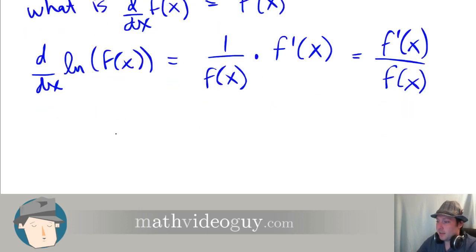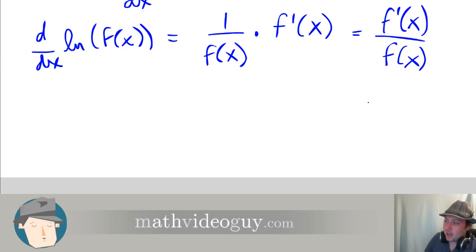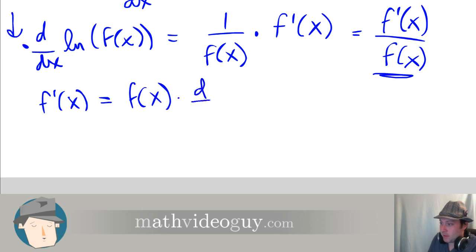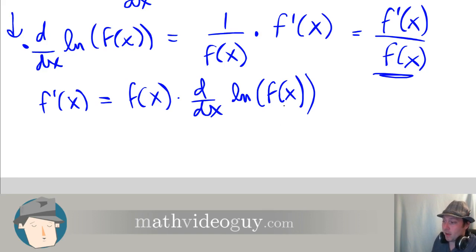This is cool because taking the derivative of ln of a function gives you the derivative of that function divided by f of x. So if you want to isolate for f prime of x, then f prime of x is equal to f of x times d by dx of ln of f of x. So the derivative of ln of f of x times f of x equals the derivative of f of x. This is the general result we're going to use to solve complicated derivatives.